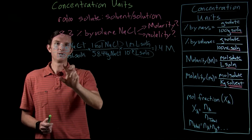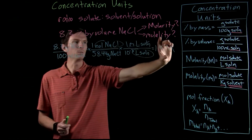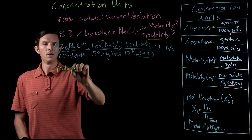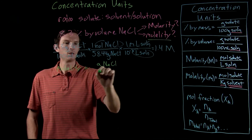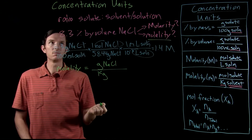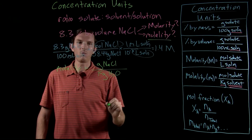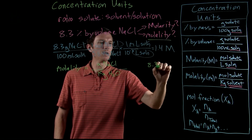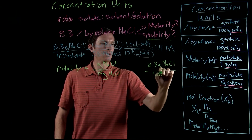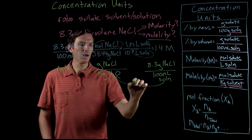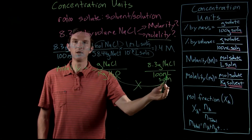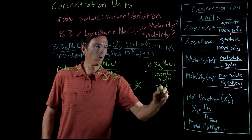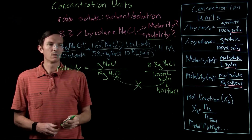This conversion is straightforward — we're just changing the ratio. Now for molality, we need moles of NaCl per kilograms of solvent. Since this is an aqueous solution, that means kilograms of water. Starting from 8.3 grams of NaCl per 100 mL of solution, we can't directly convert milliliters to kilograms of water because the solution includes both water and sodium chloride.